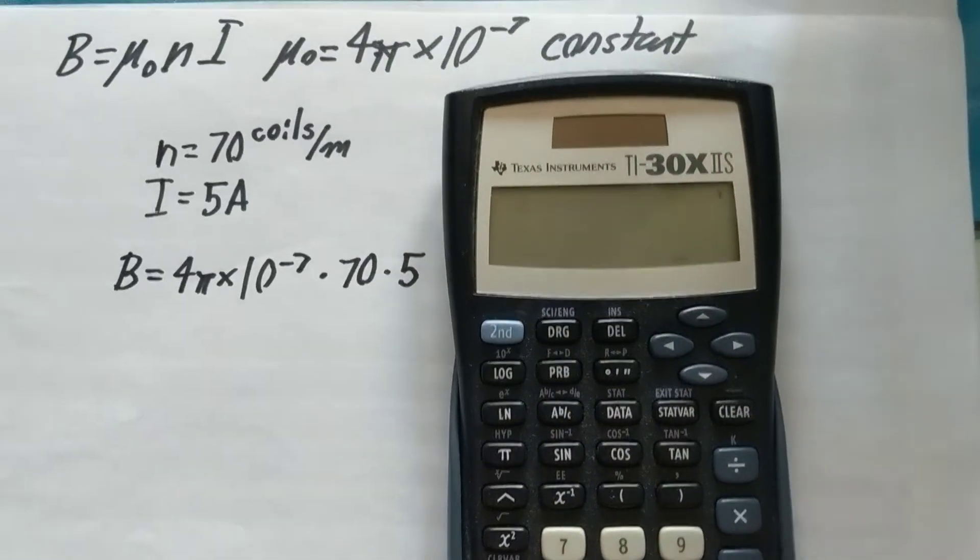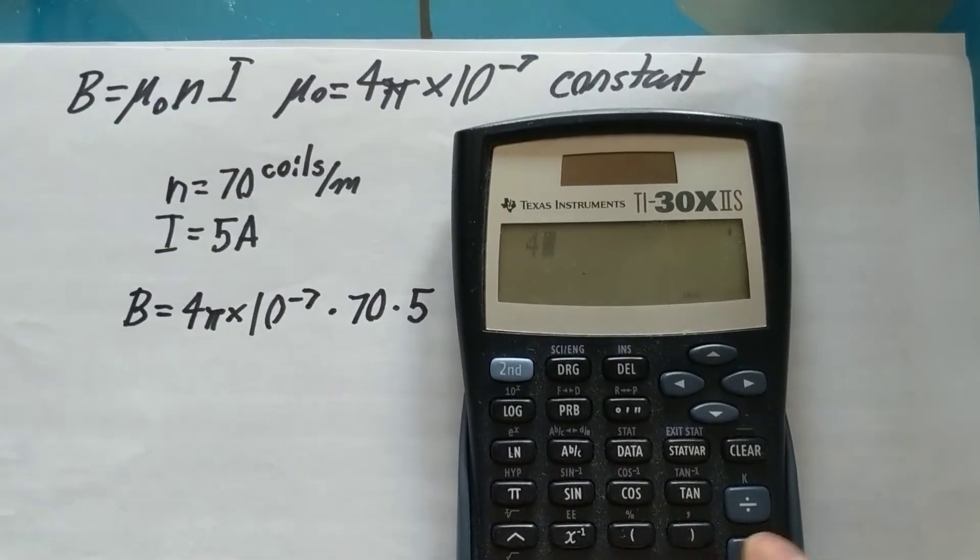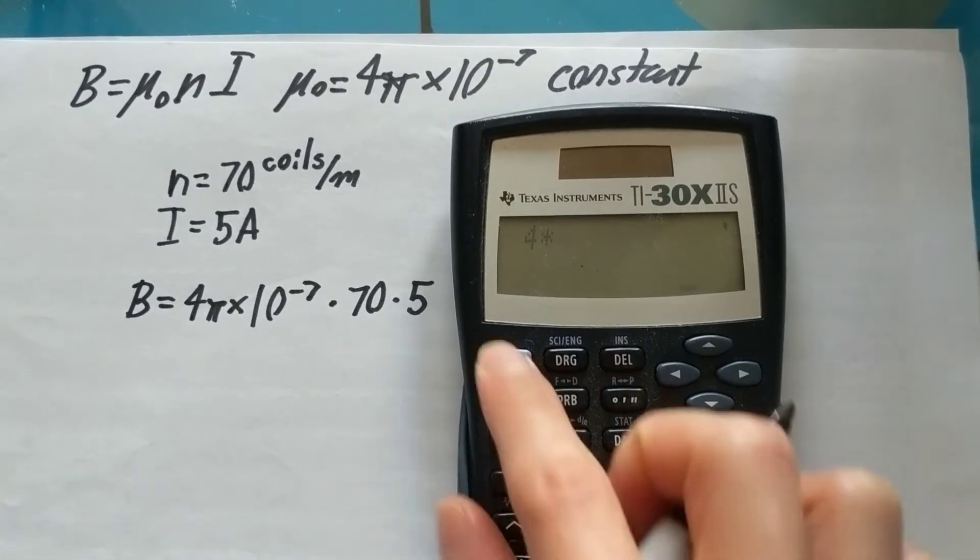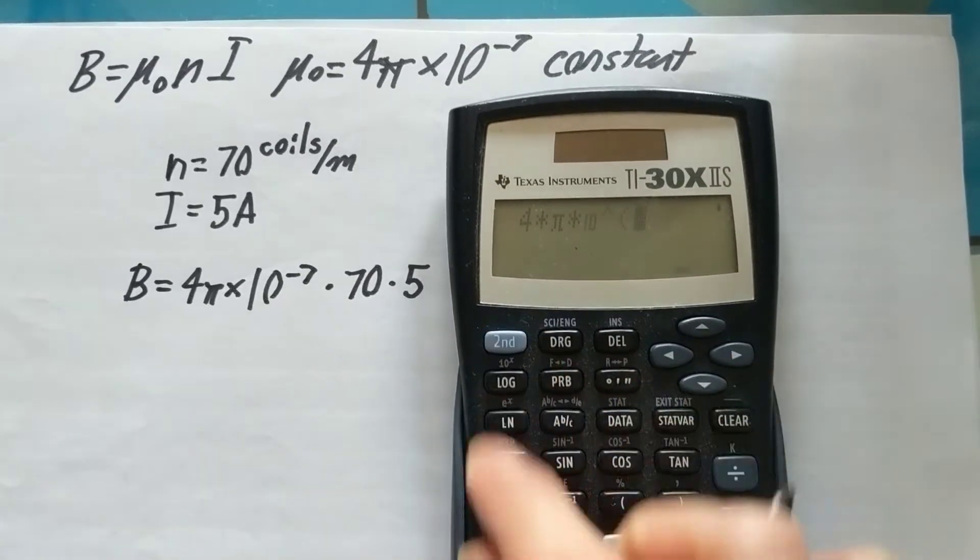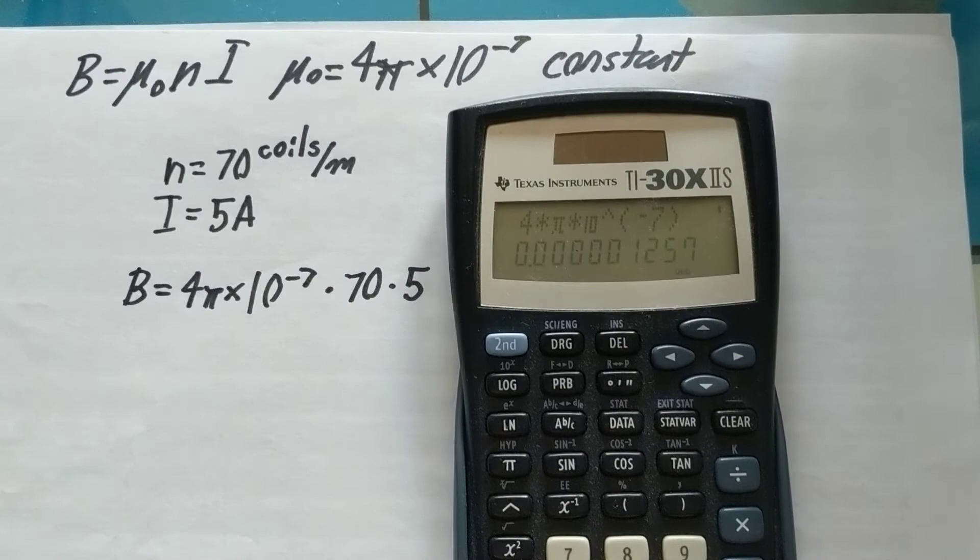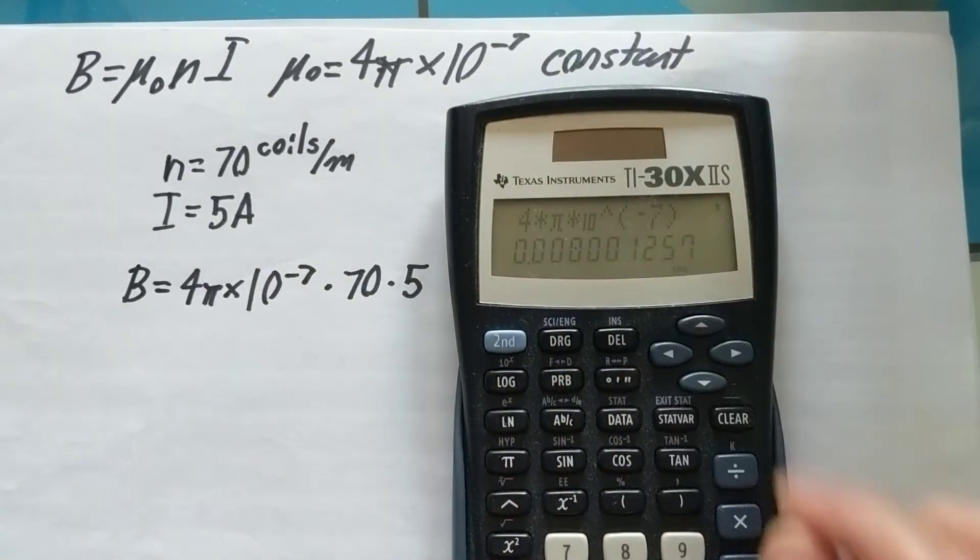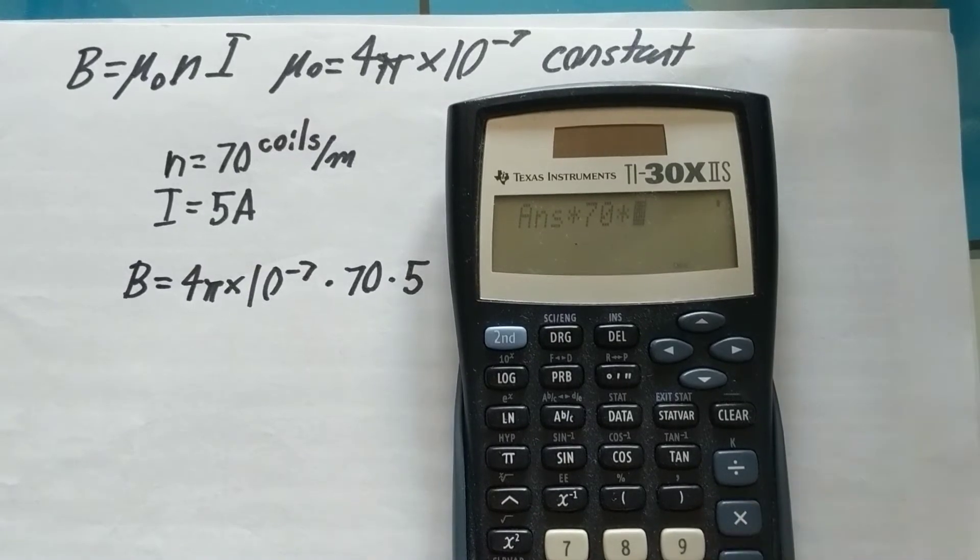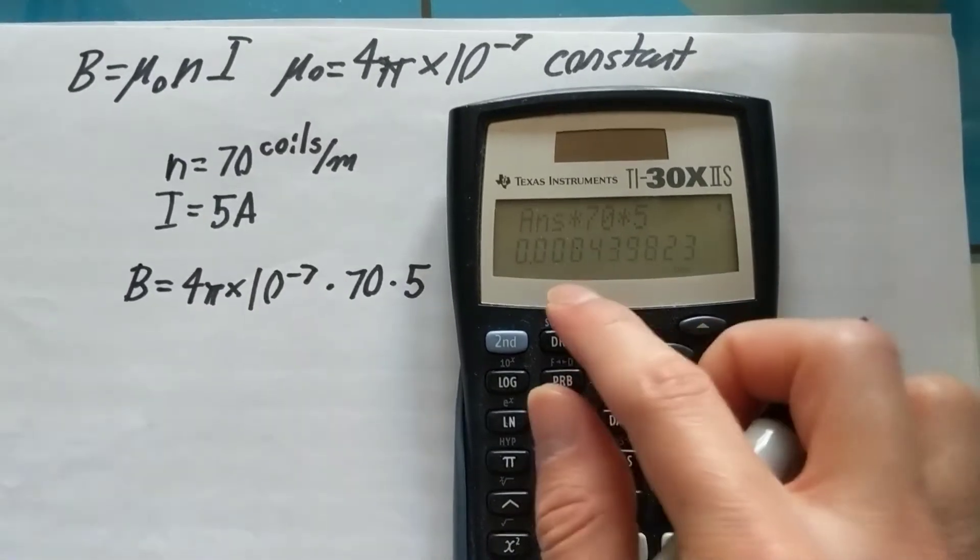Now we're going to go ahead and grab our calculator. Let's go ahead and do 4 times pi, times 10 to the negative 7th, and you get that value, which is really small, but multiply times 70, multiply times 5, and you get this.